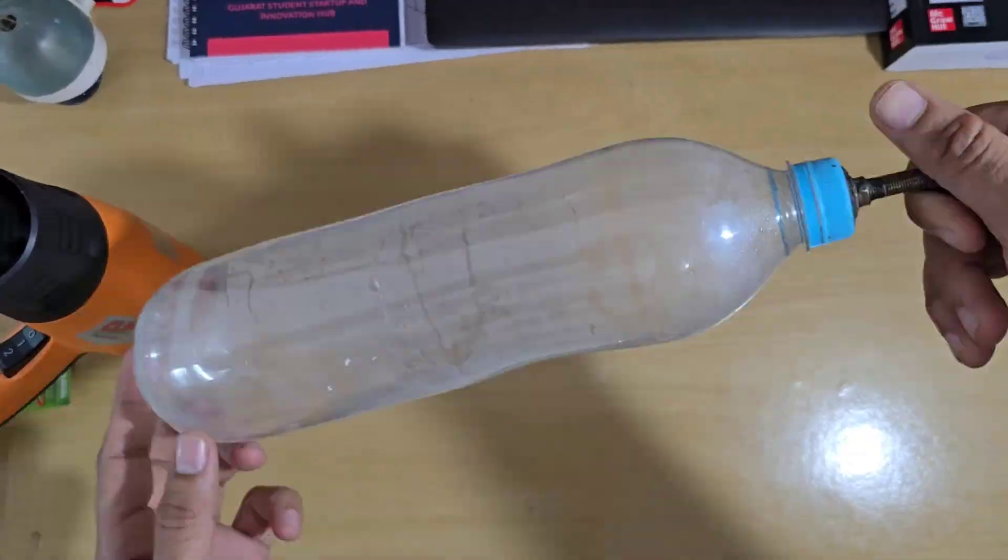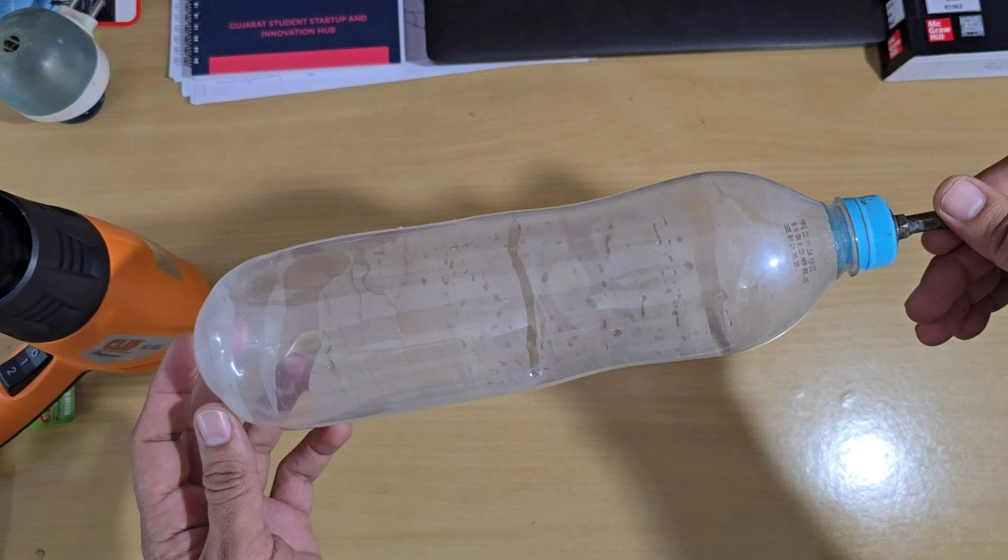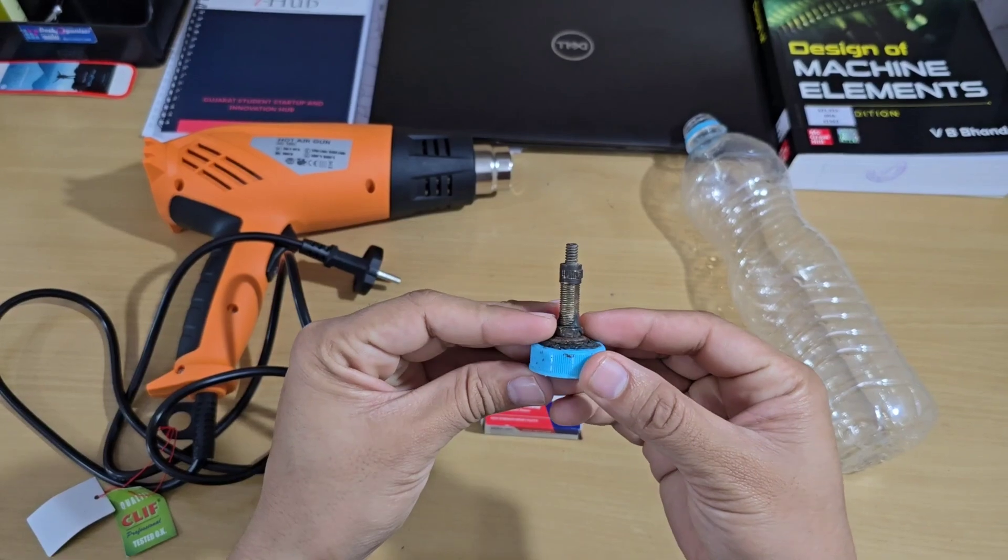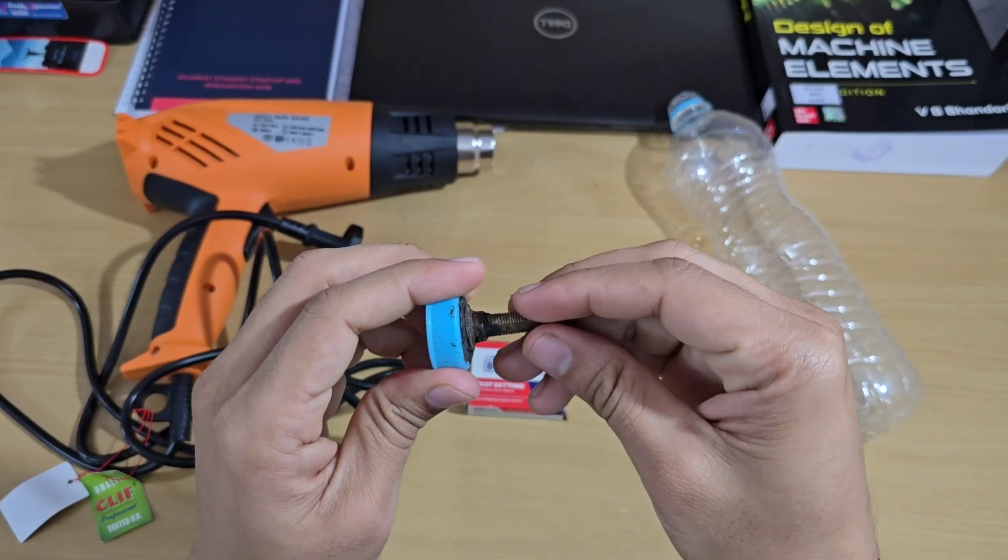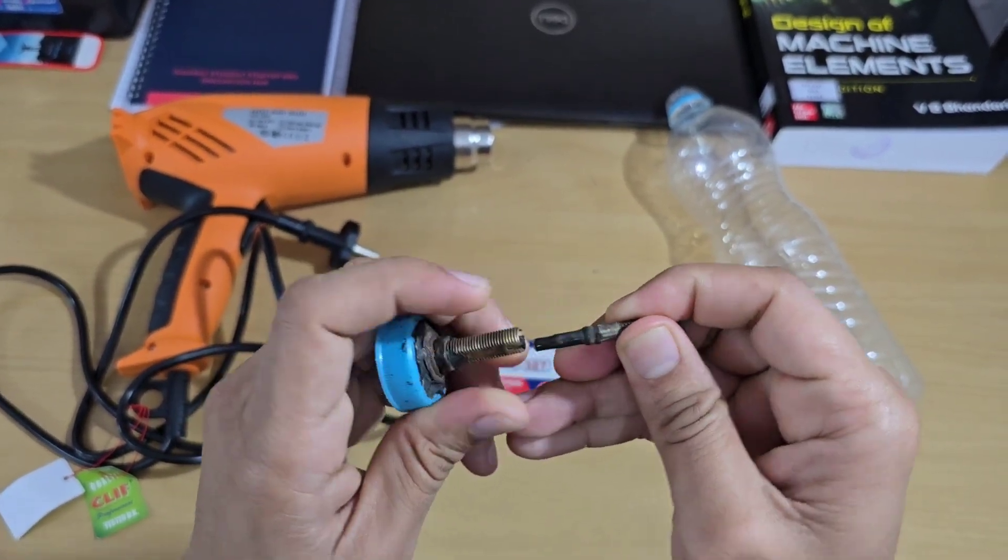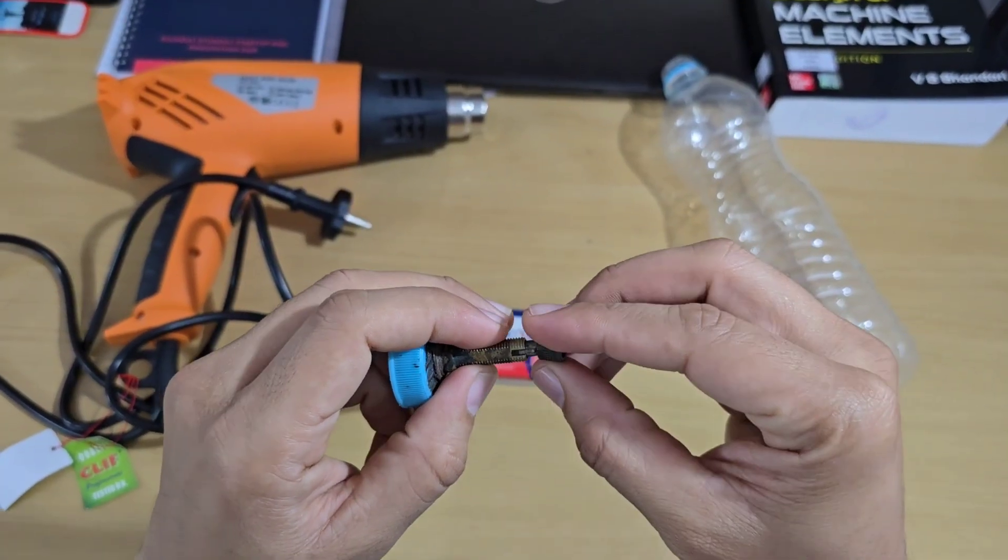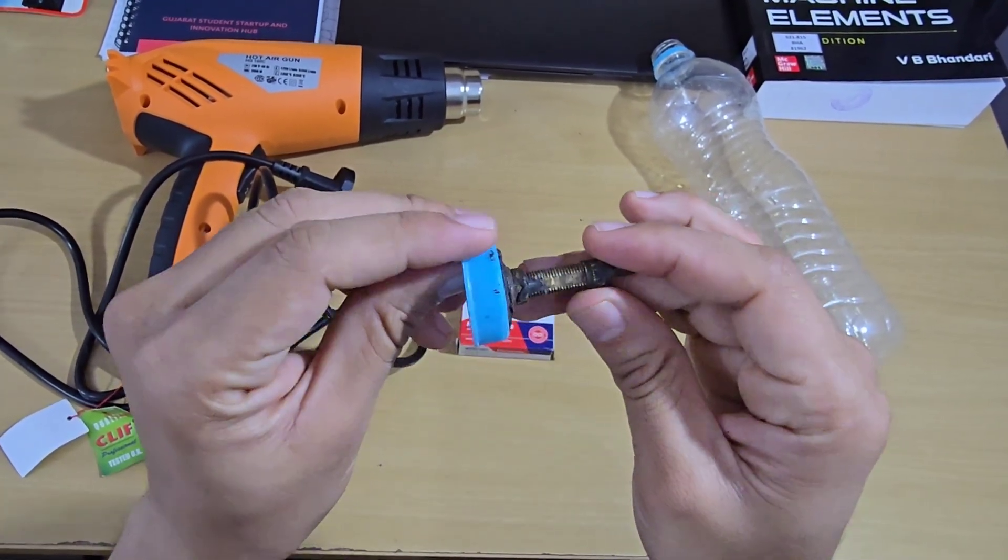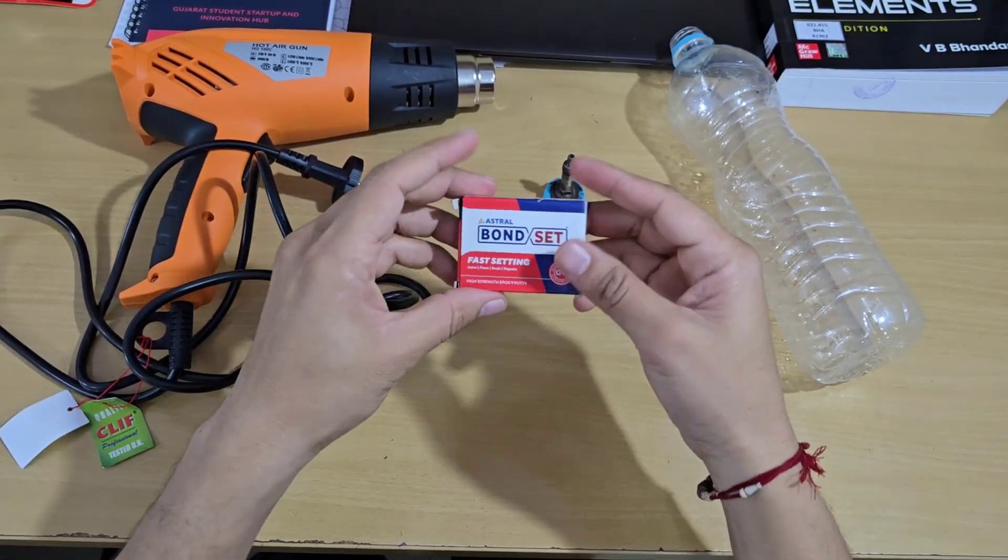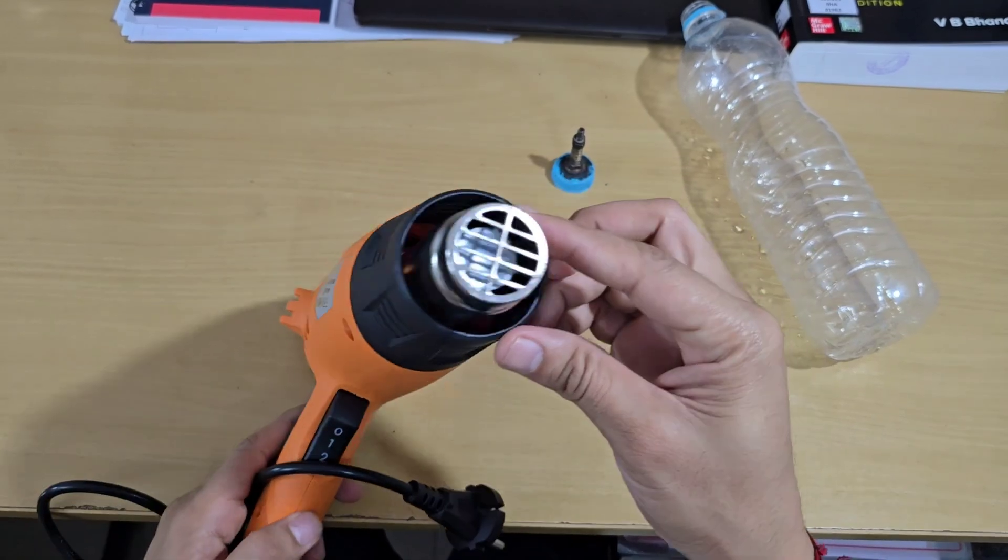I'll also show how you can use RAMPS 1.4 boards to control nozzle temperature. First, let's see how you can prepare a bottle to get even strips. For this, you'll need to attach a bicycle tube valve with the bottle cap as shown here. Don't worry if you don't have one - I've also shown another method in the later part of the video. You can use epoxy-based adhesive to make it leak-proof.